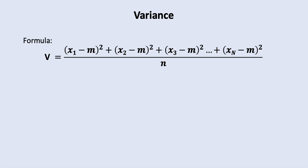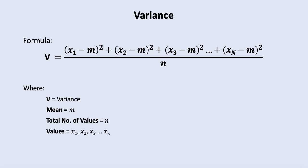But in variance, the only difference is that we are now squaring the result, so the square root is removed. This is the variance formula in which v is the variance, m is the mean, n is the number of values, and the values are the same x1, x2, x3, up to xn.